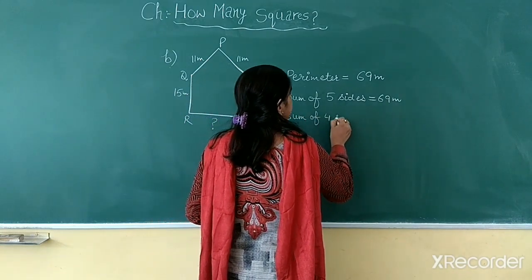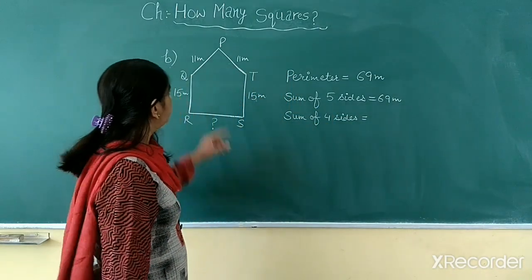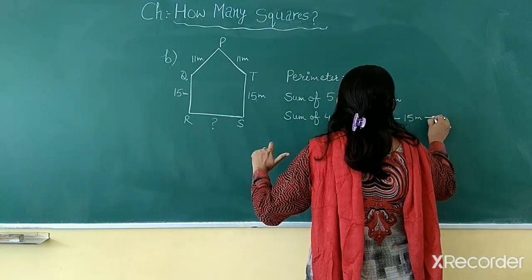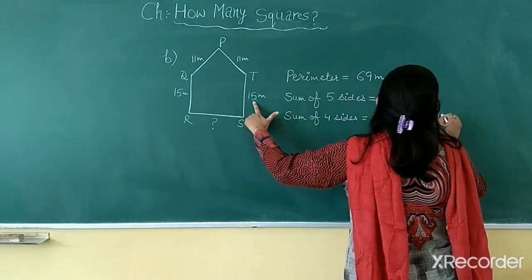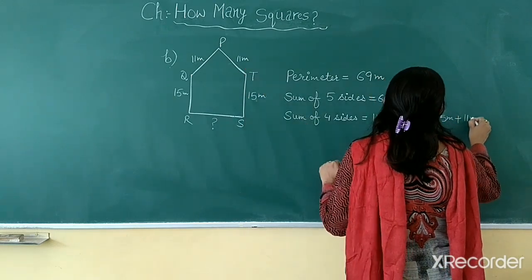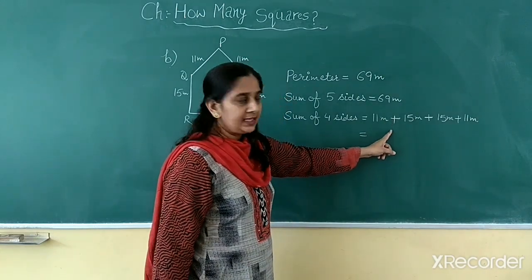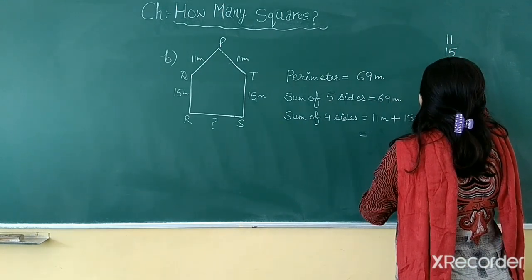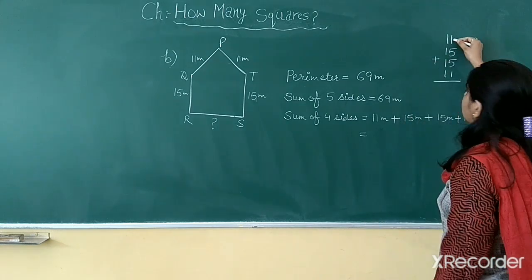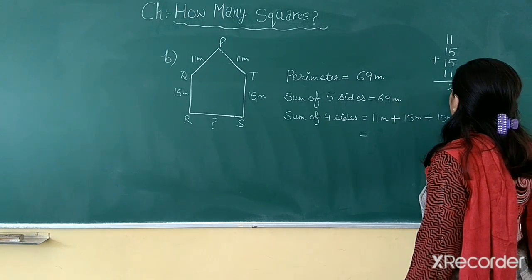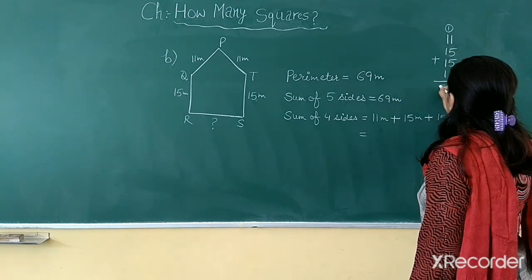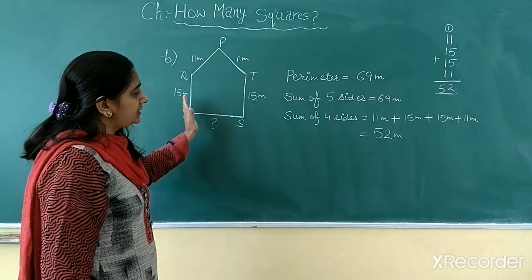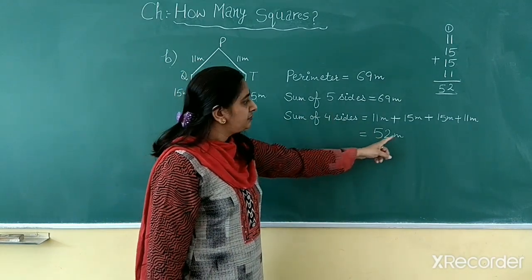Sum of the 4 known sides: this length is 11 meter, plus this length is 15 meter, plus this length is 15 meter, and this length is 11 meter. When you add these 4 lengths: 11 plus 15 plus 15 plus 11. Adding them up gives you 52 meter. So the total length of the 4 known sides in this pentagon is 52 meter.